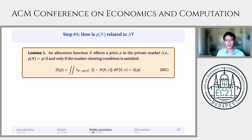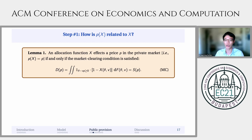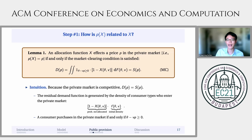To begin, let us examine the relationship between the competitive price p and the allocation function x. An allocation function x affects price p in the private market if and only if the market clearing condition is satisfied — namely, residual demand from consumers who are not allocated the public option but are still willing to pay a price of p must equal supply at the price p. The most important takeaway is that this market clearing constraint is an affine function of the allocation function x.